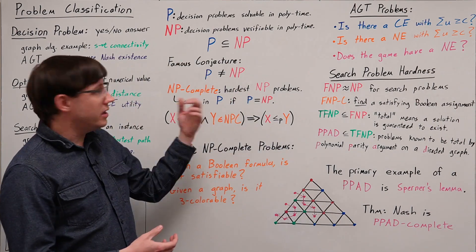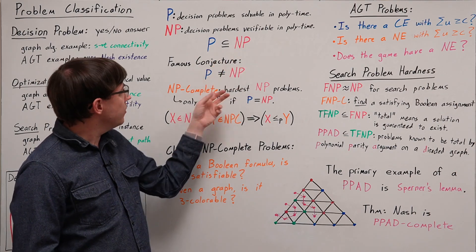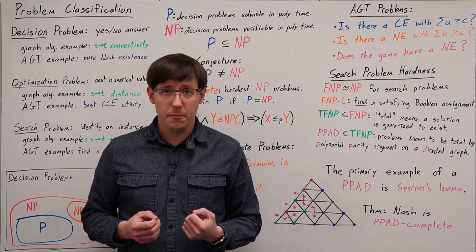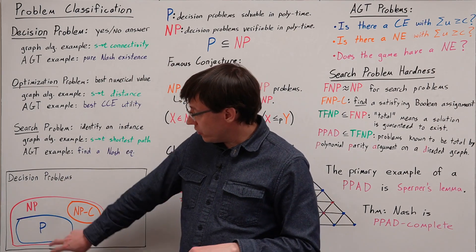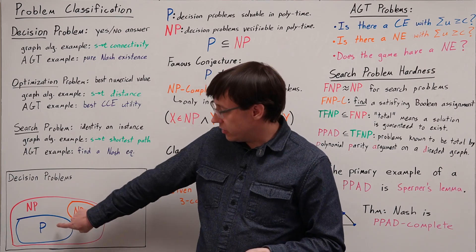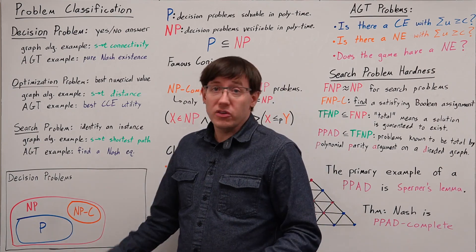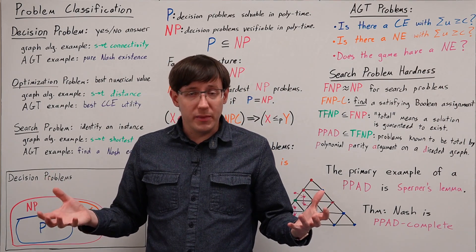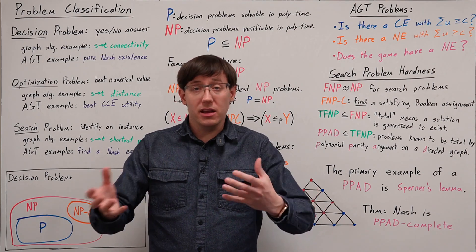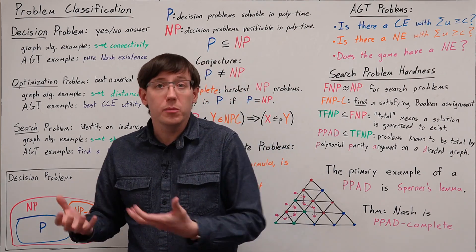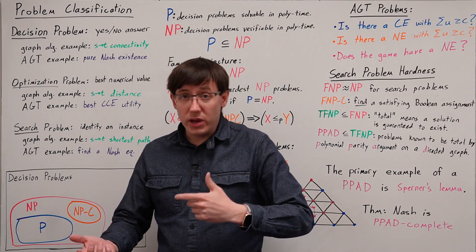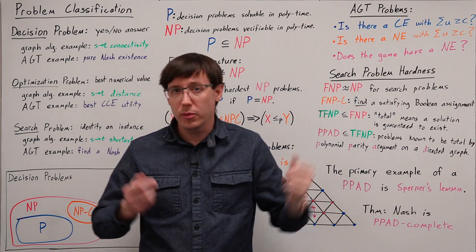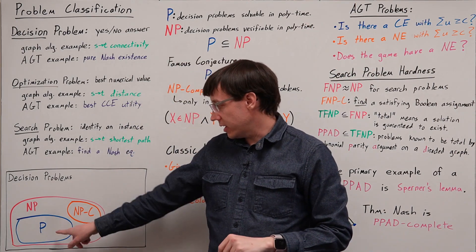Applying these classifications of P, NP, or NP-complete to some of the problems we know from game theory: all of the decision problems that we know how to solve with a polynomial time algorithm fall into the class P. For example, checking whether a game has a pure Nash equilibrium requires looping through the entire payoff matrix, but that is polynomial with respect to the input size. And all of the problems we've solved with linear programming, like checking for a correlated equilibrium with certain properties, also belong in the class P.